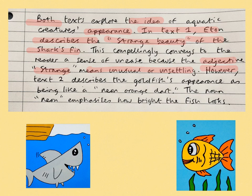Then I take the connective 'however,' which asserts I'm going to explore a difference. I roll out another quotation — this time from Text Two: 'the neon orange dart,' asserting the idea of appearance in Text Two. That quotation is embedded and appropriately succinct. Then I analyze the noun 'neon' — looking at how language shapes meaning. 'Neon' just suggests this goldfish is very bright — very colorful.